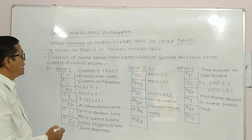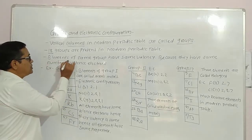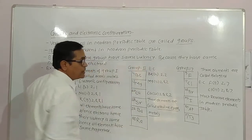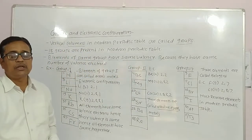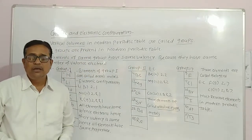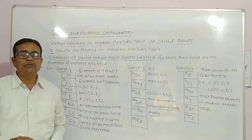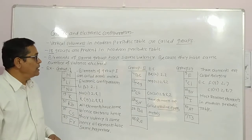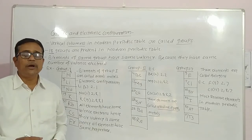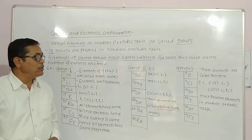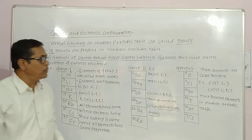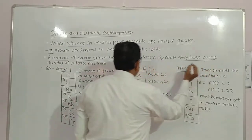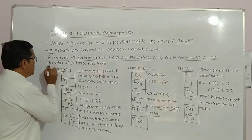Elements of the same group have the same valency. There is one important reason for this — elements of same group have same properties because according to their electronic configuration, they have the same number of valence electrons.